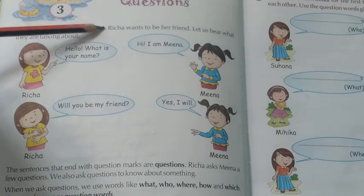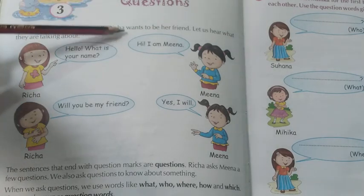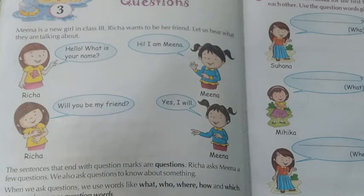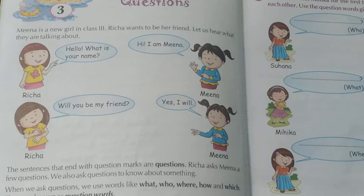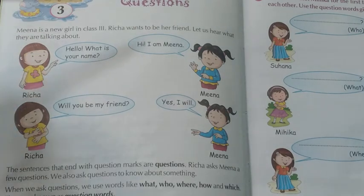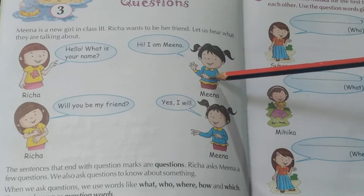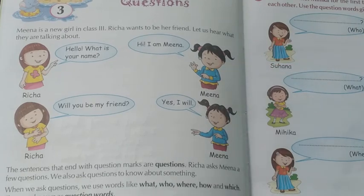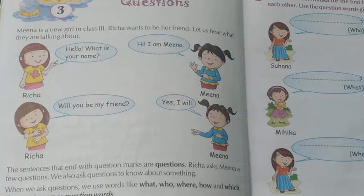Meena is a new girl in class third. Richa wants to be her friend. Let us hear what they are talking about. It's a small conversation between two girls, namely Richa and Meena. They are both students of class third. Meena is a new girl in class third and Richa wants to be her friend.